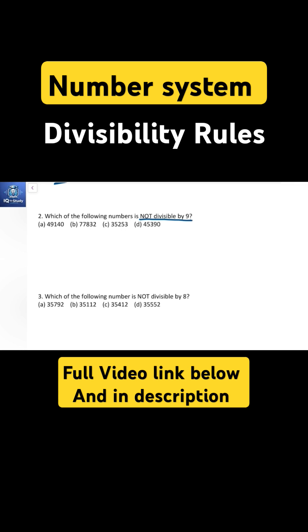First option, 49140: the sum is 4+9+1+4+0 = 18, so it is divisible by 9. Second option: 7+7+8+3+2... Third option: 5+5+3, which equals 18, also divisible by 9. Fourth option...